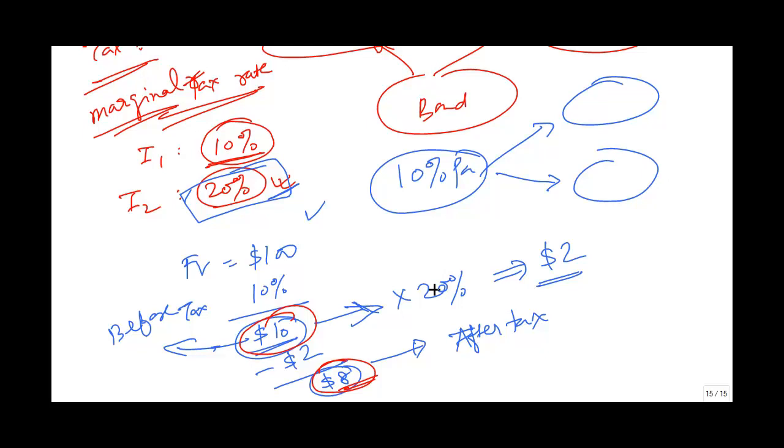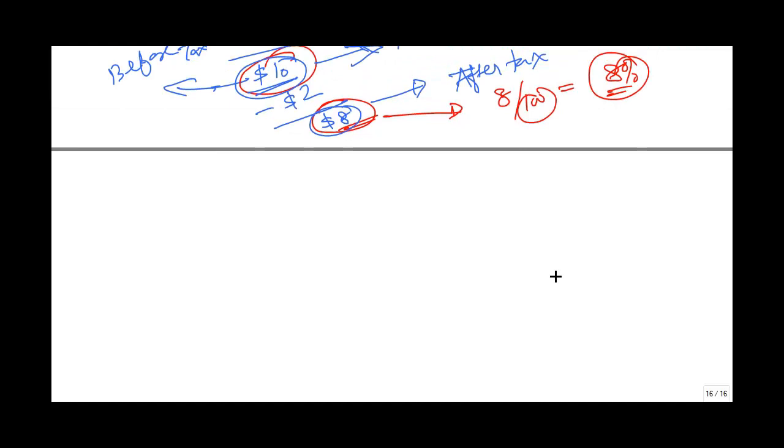If you compare this $8 with the face value, it is 8%. How has this 8% arrived? The after-tax yield you have got, which is 8%, is coming from the 10%.